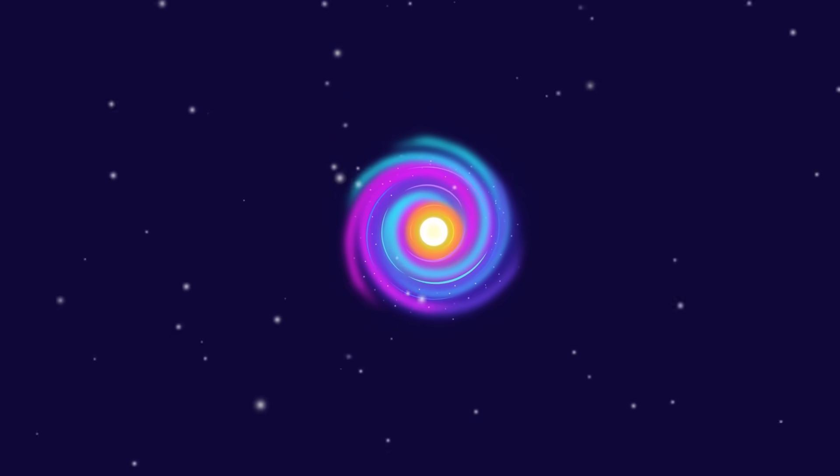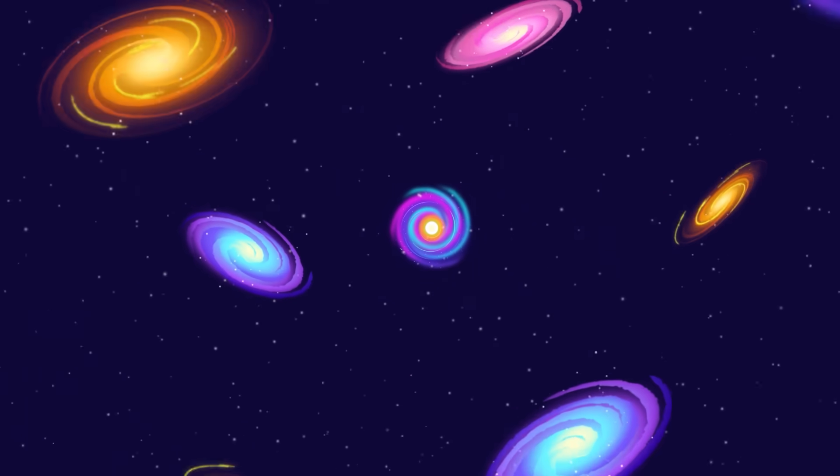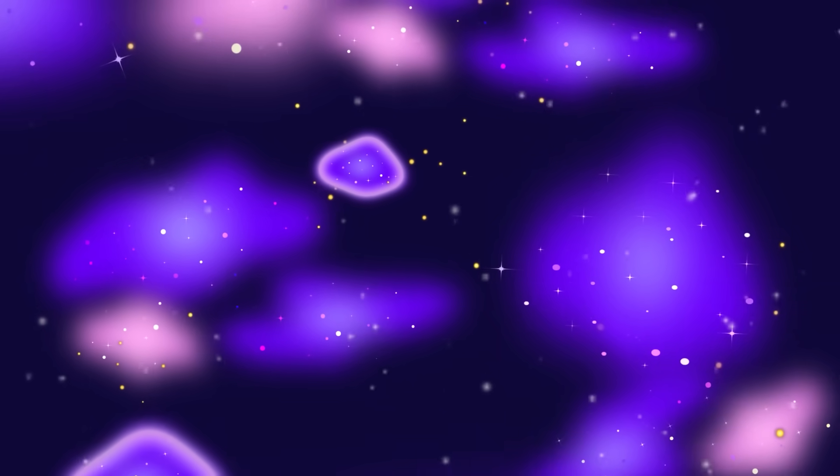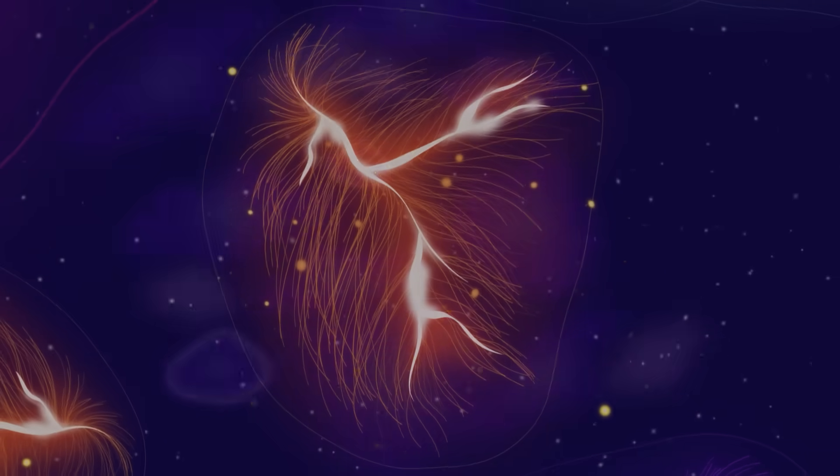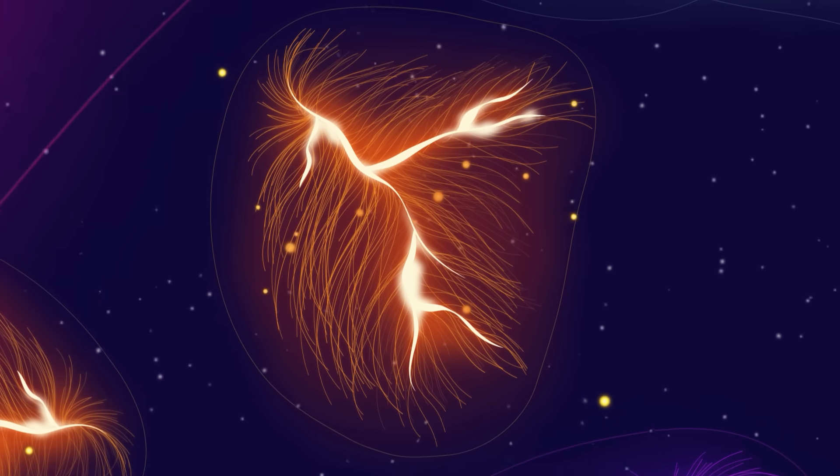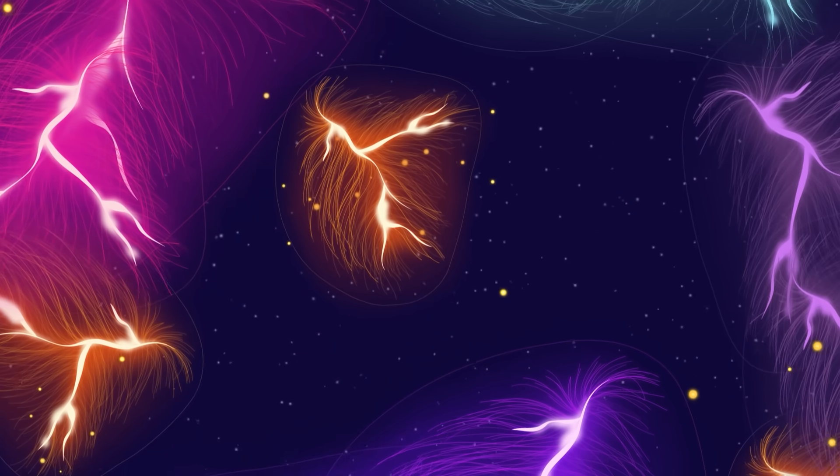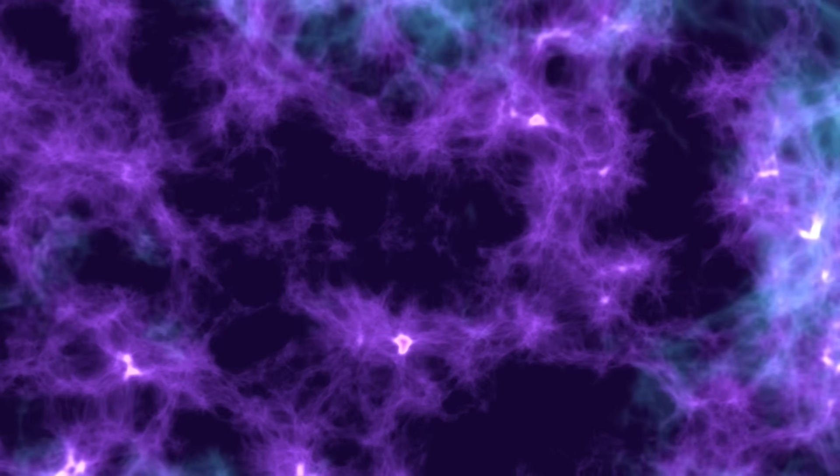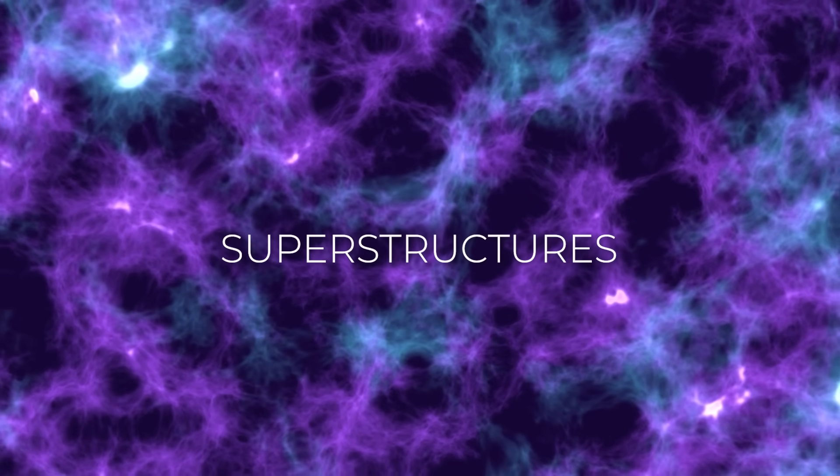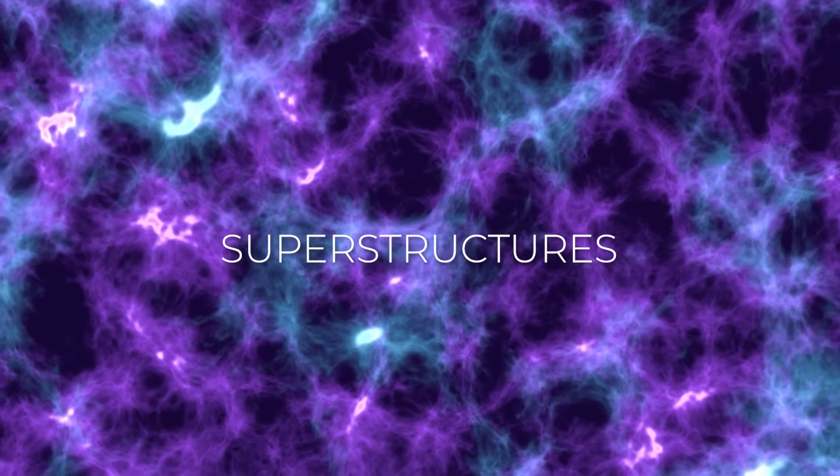In the cosmic hierarchy, galaxies group together to form clusters. Clusters gather into even larger formations in a confined, mostly spherical region called superclusters. And when galaxy clusters stretch across huge distances and link with one another, they become superstructures, the biggest things we know of in the universe.